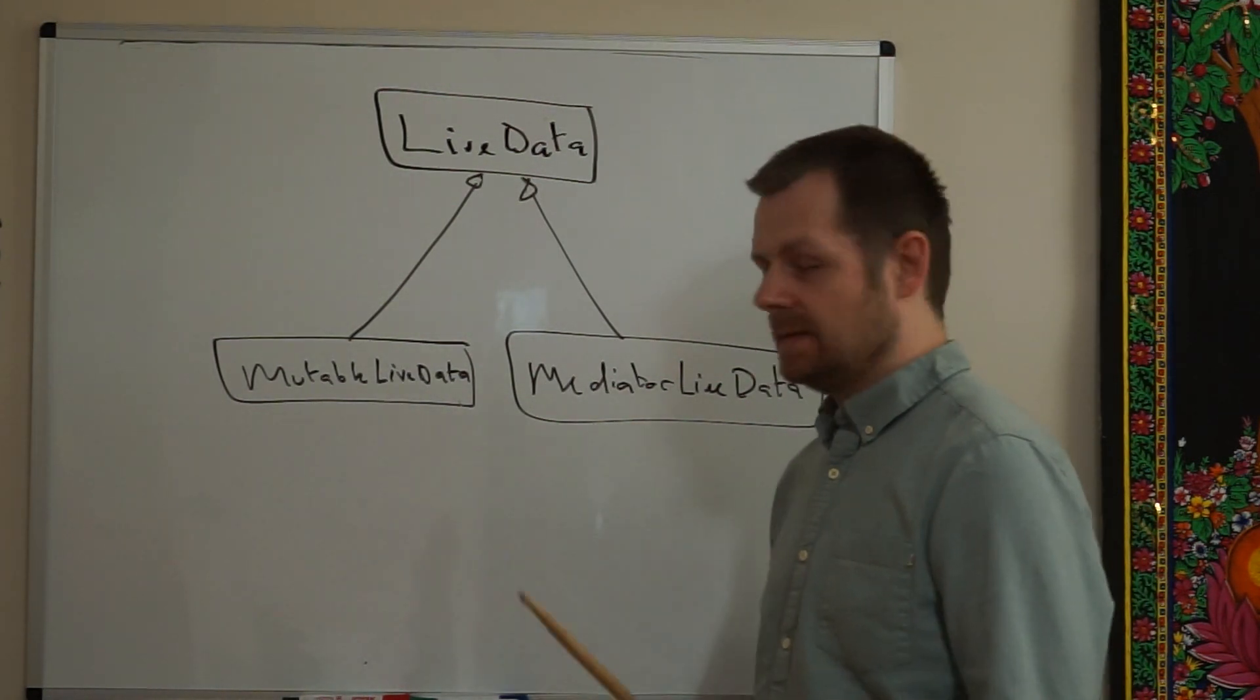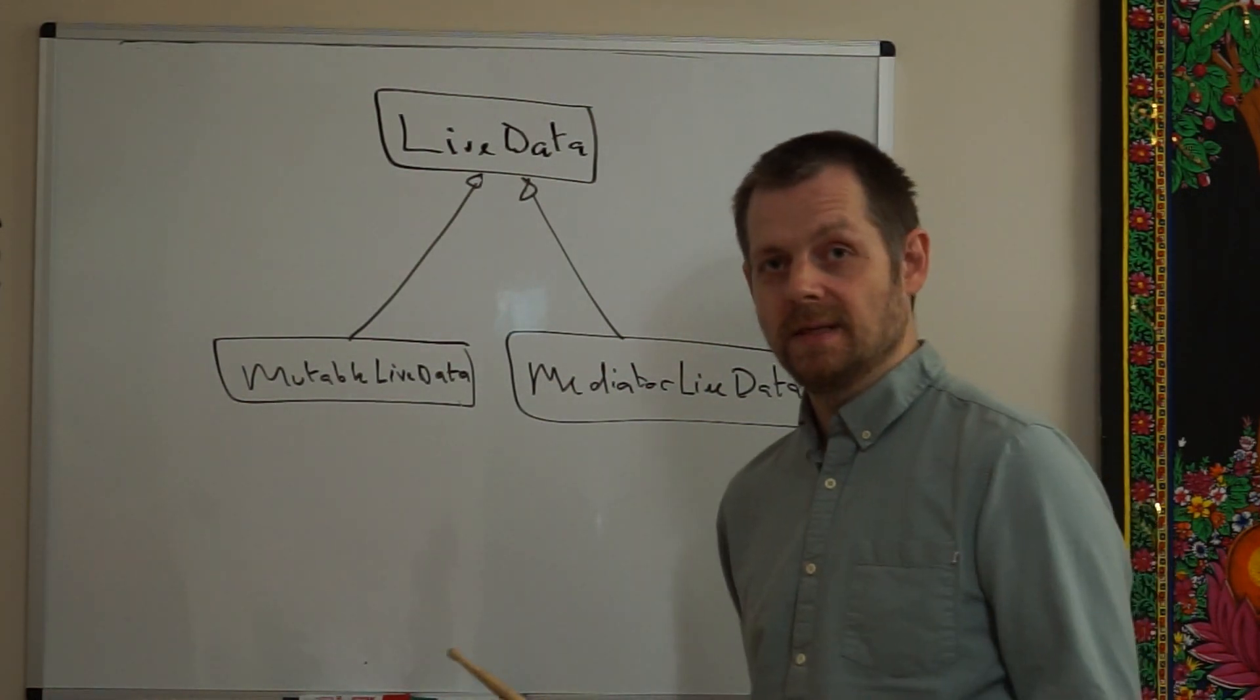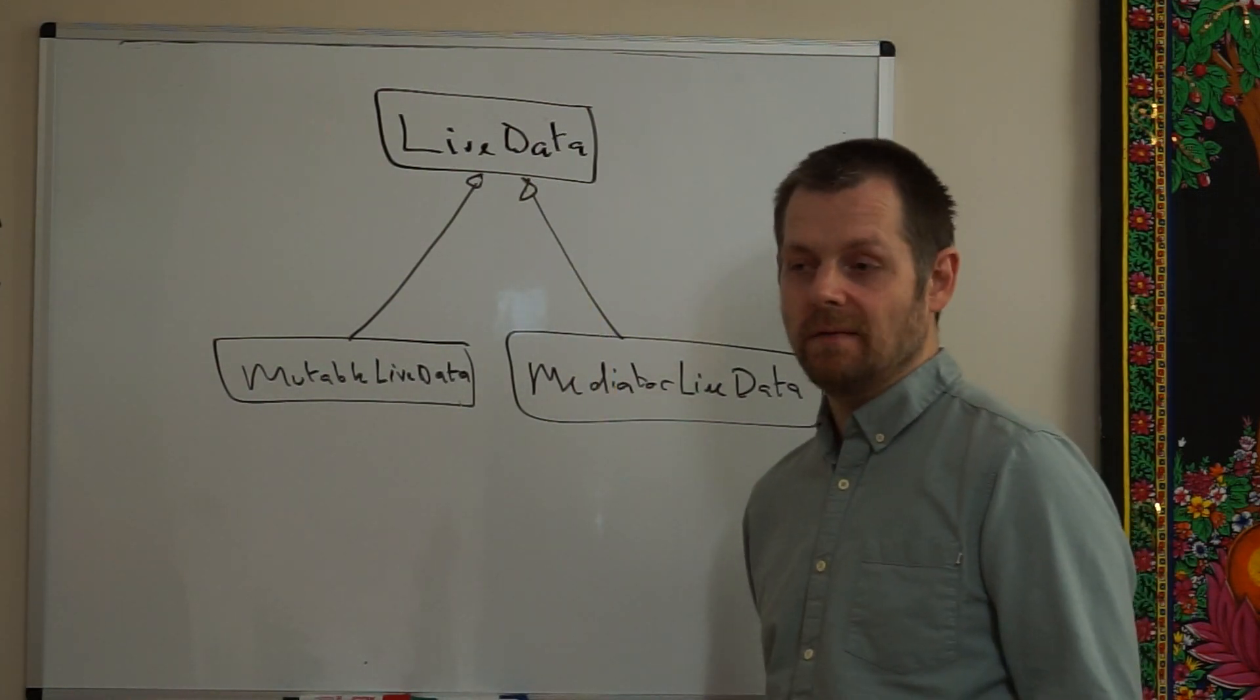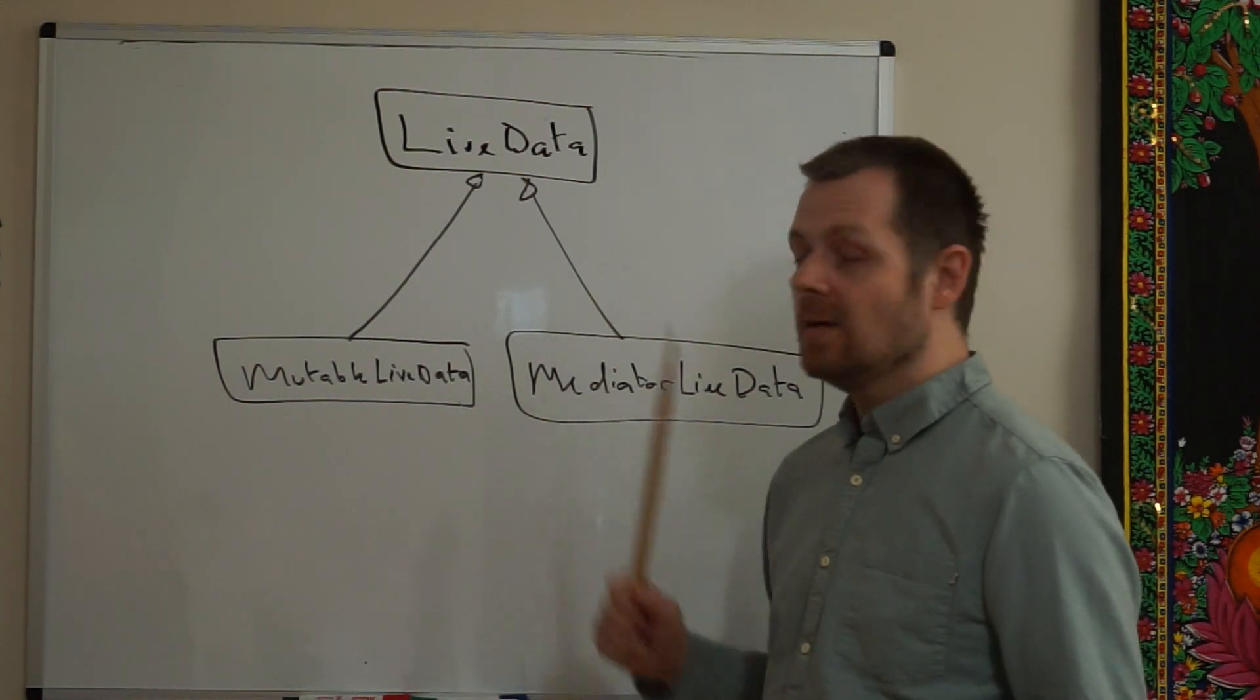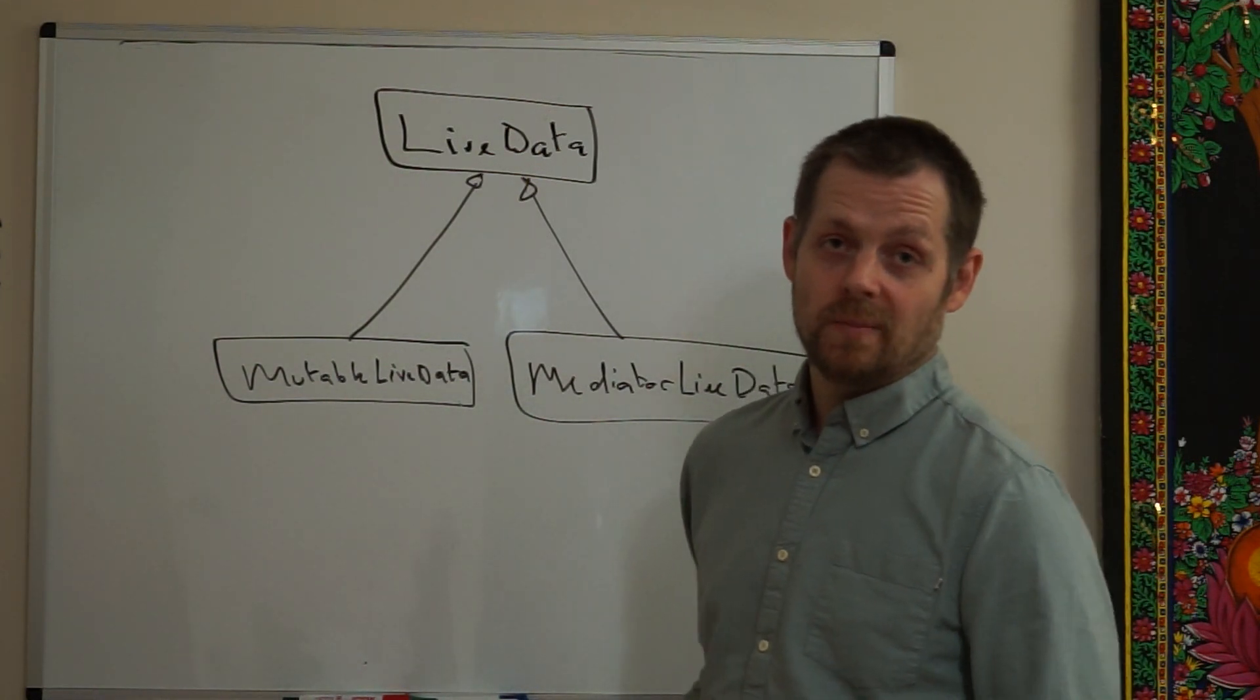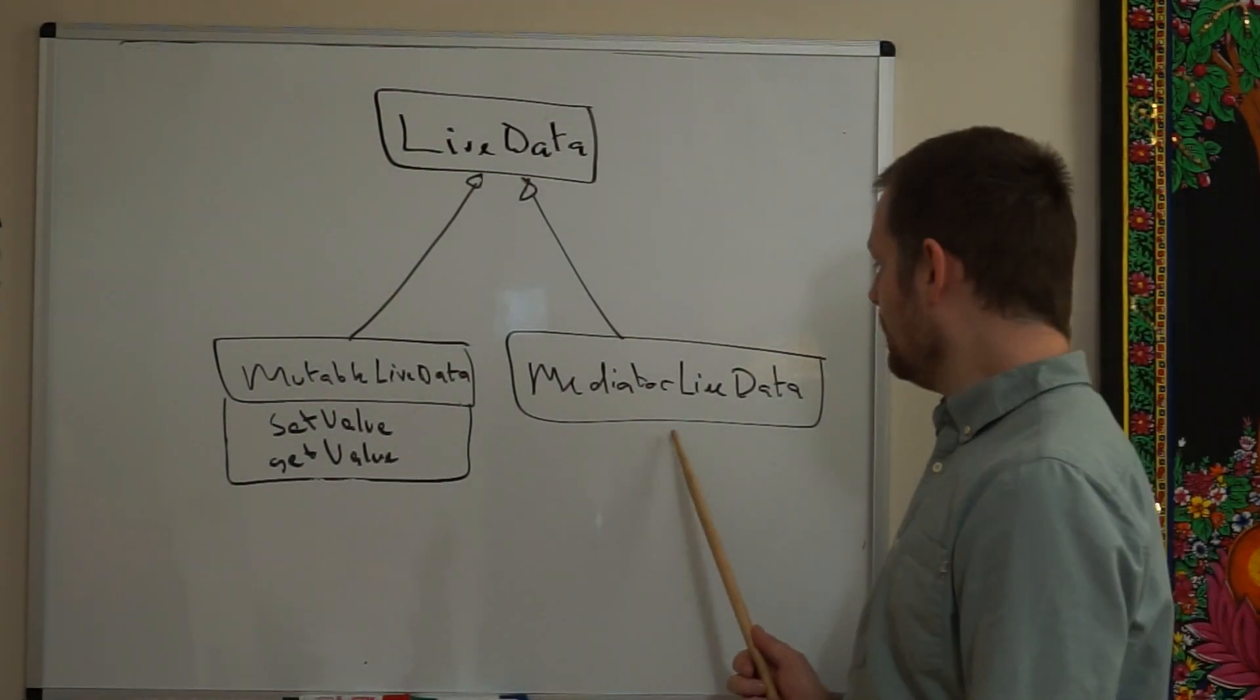There are a couple of subclasses of LiveData. One of those is MutableLiveData. This class is a simple version of LiveData that exposes setValue and getValue methods. LiveData has setValue and getValue methods but these methods are protected. MutableLiveData subclasses LiveData and overrides the setValue and getValue methods making them public.